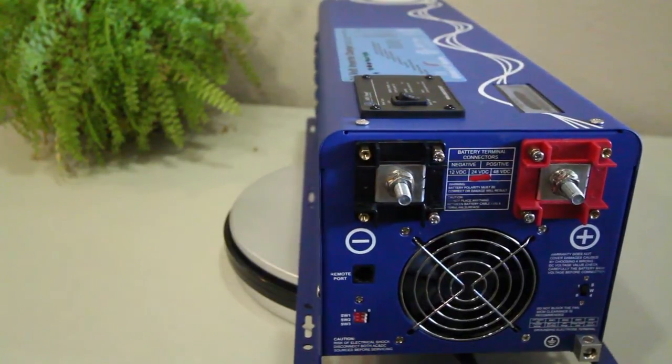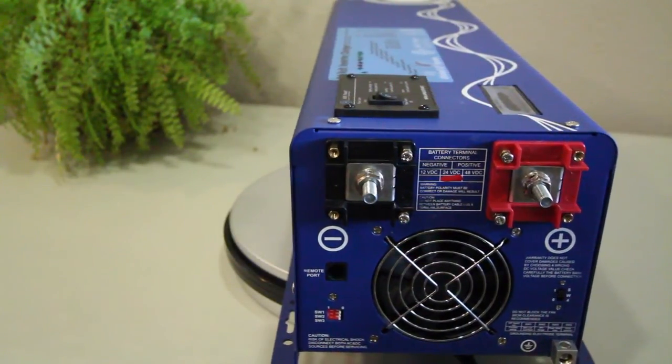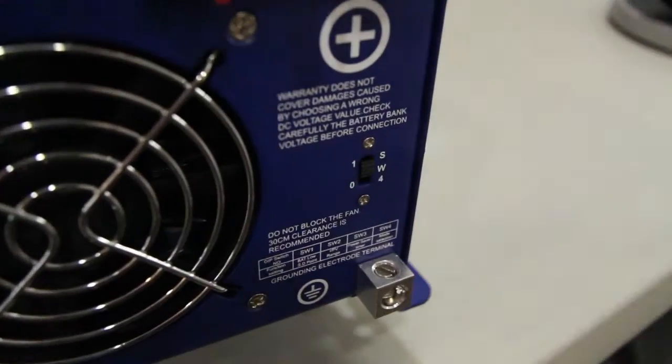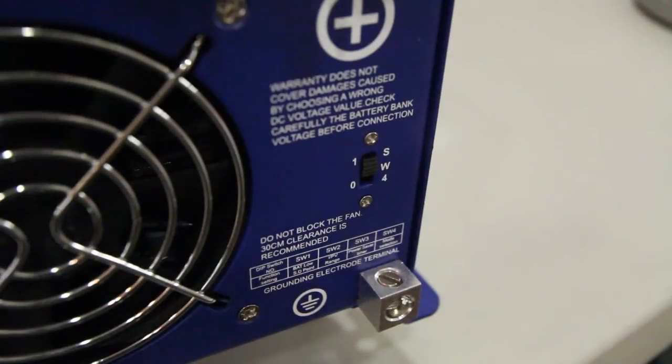There is also a port on the DC side of the unit for an optional remote and another SW switch, the fourth one, that will allow you to switch between AC and battery priority modes.